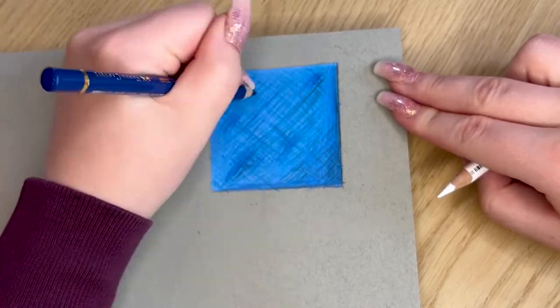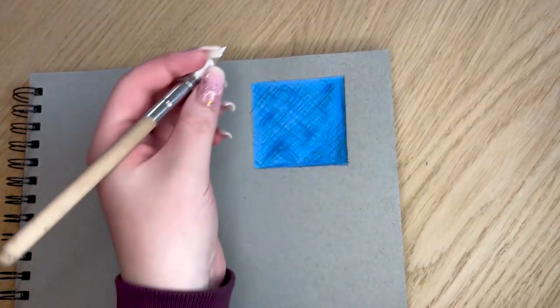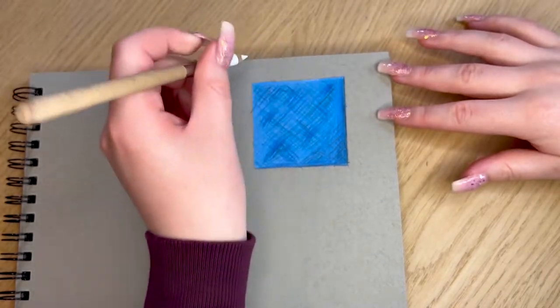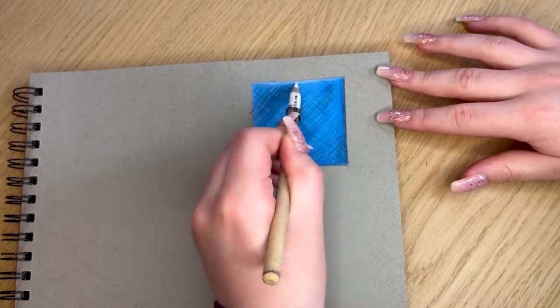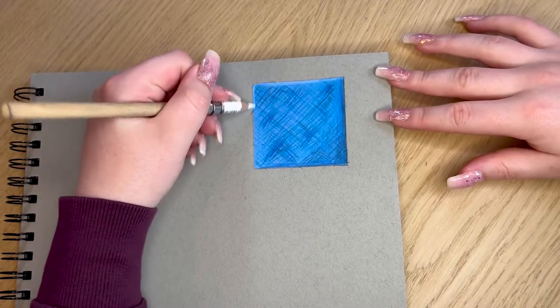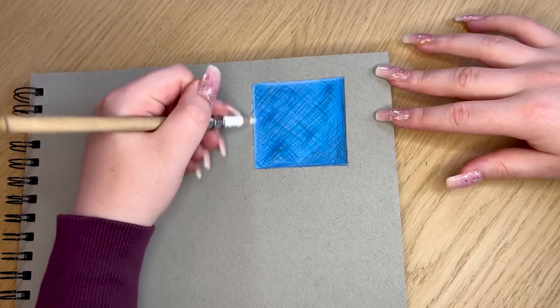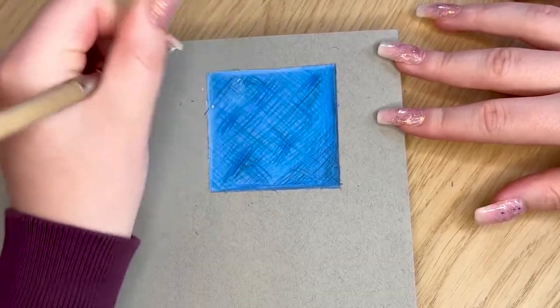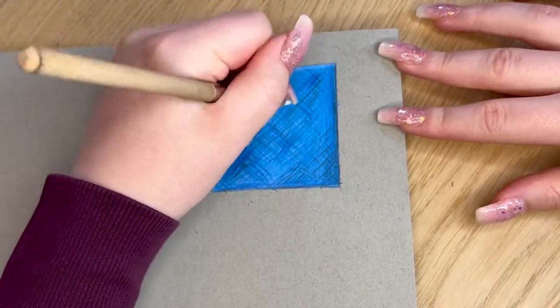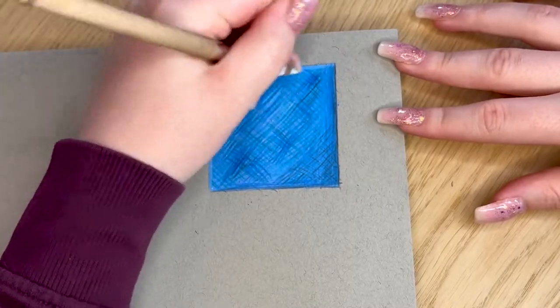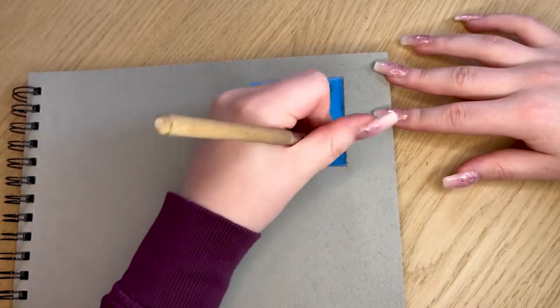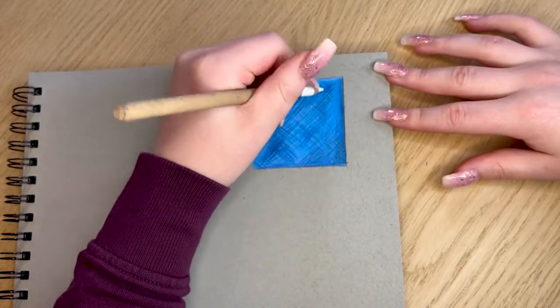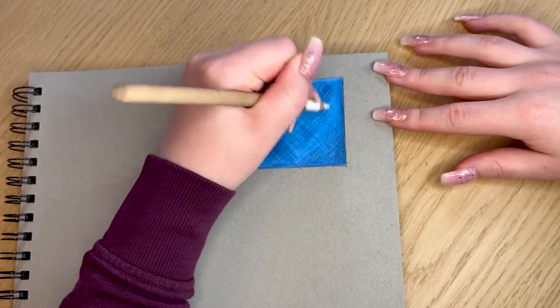Now I'm gonna take my white pencil and I'm gonna start to add some highlights. I'm gonna add highlights along the top because this is where we said that our highlights would be coming in from. Then I'm just gonna go in between some of the lines and I'm just gonna add some wee white lines for our highlights pretty much. I'm not gonna add these all over, especially not towards the bottom because obviously that's where our shadows are.